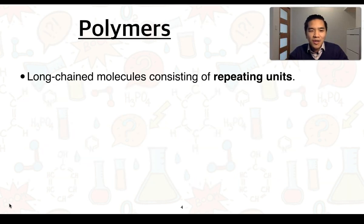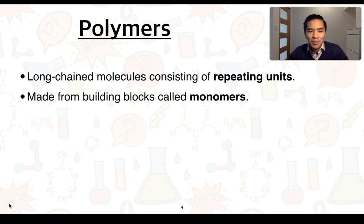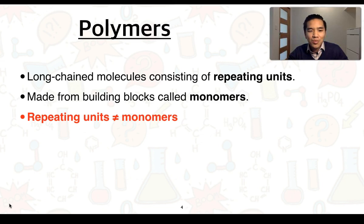From previous studies, we've learned that polymers are long-chain molecules consisting of repeating units, and polymers can be made from these so-called building blocks which we call monomers. It's important to understand that these two terms aren't interchangeable — repeating units are not the same thing as monomers.